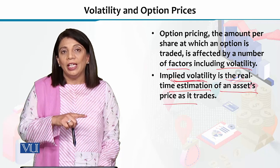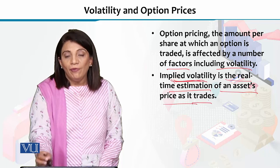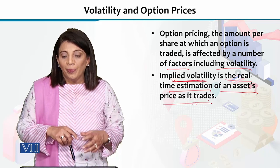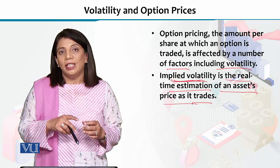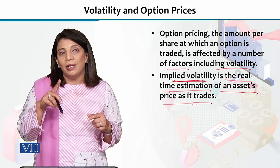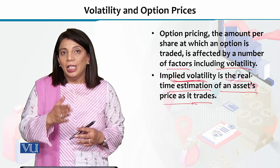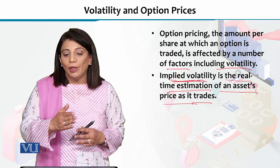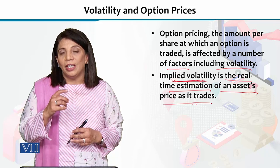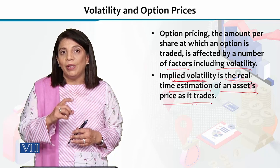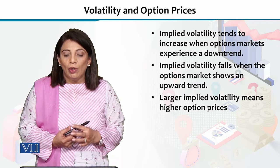Implied volatility is the real-time estimation of an asset's price as it trades in the market. Jab hain dekhte hain ki koi bhi asset market mein trade ho raha hai, toh us ke andar fluctuations aate hain. Agar aap real-time estimation kerte hain — asset ki market ke andar kis time, kis tarah se uski trading ho rahi hai, uski prices mein kya effect ho raha hai — is particular phenomenon ko jab hain calculate kerte hain, toh that helps us in knowing the implied volatility of that particular asset.